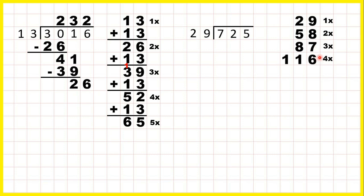When the last digits are 9, you can spot the pattern that the times table makes: the ones digit is going down in 1s and the tens digit is going up in 3s. That's because 29 is 1 less than 30. Now that we've worked out our 29 times table up to 5 times, we can look back at our question.